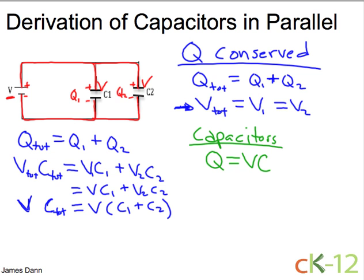And now all that's left to do is divide both sides by V and cancel. And we get our formula for how to add capacitors in parallel. When capacitors are in parallel, the total capacitance is just the addition of all the capacitors in parallel.